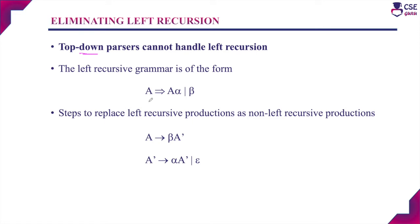If the general form of the left recursive grammar is A derives A-alpha or beta, the left recursion can be eliminated using two steps. The first step is A derives beta A-dash, and the second step is A-dash derives alpha A-dash or epsilon. So instead of the original grammar we write these two productions to eliminate the left recursion.